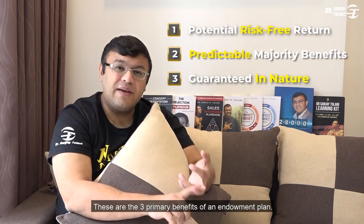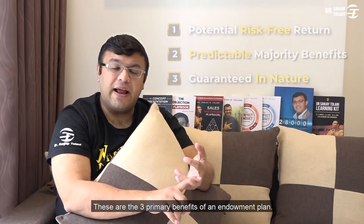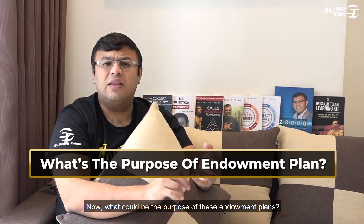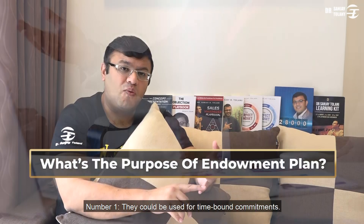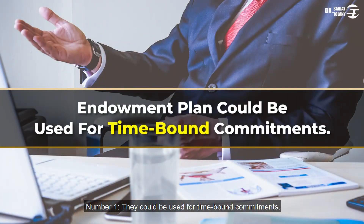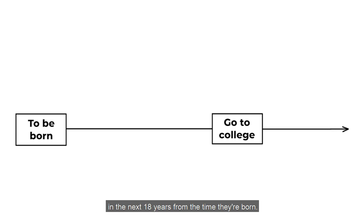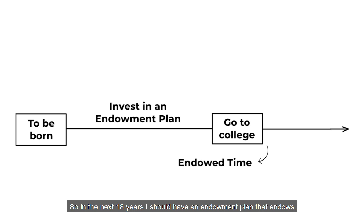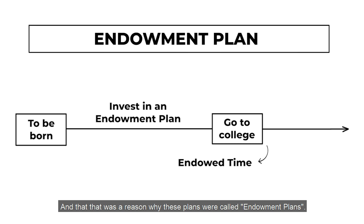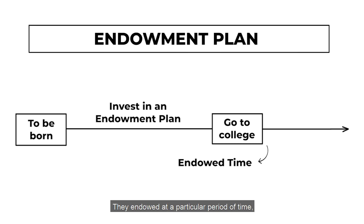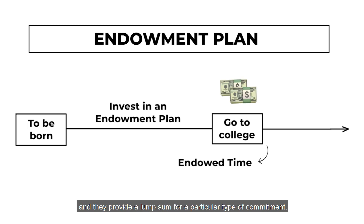These are the three primary benefits of an endowment plan. Now, what could be the purpose of these endowment plans? Number one, they could be used for time-bound commitments. For example, I know that I have to fund my kids' education in the next 18 years from the time they're born. There was a reason why these plans were called endowment plans — they endow at a particular period of time and provide a lump sum for a particular type of commitment.